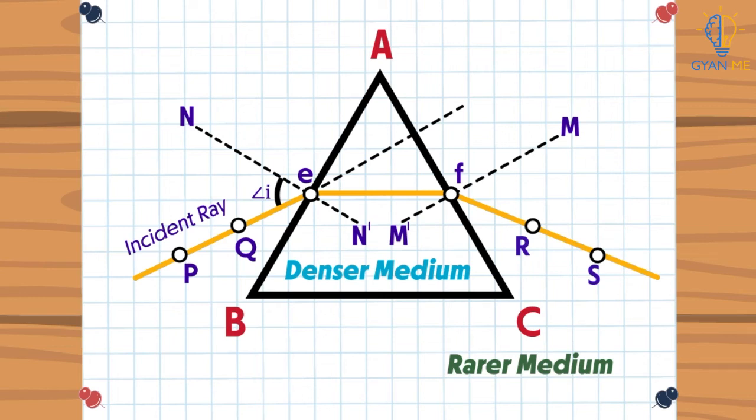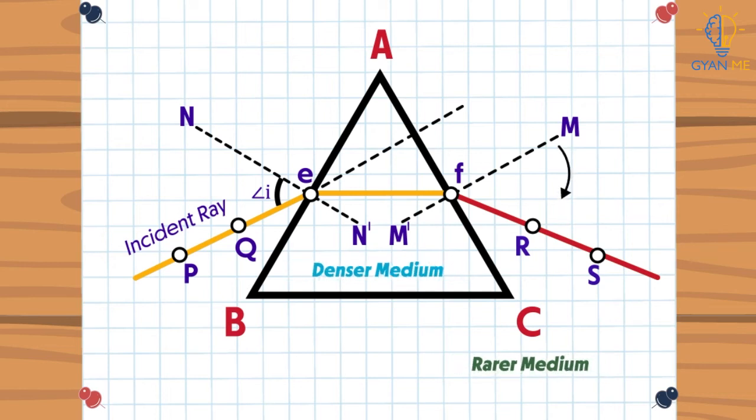So it will bend like this again, but this time it is opposite to the previous. This time light bends away from the normal. So now RS becomes the refracted ray or an emergent ray for the surface AC. This ray forms this angle with the normal MM' and it is called as angle of emergence, that is angle E.